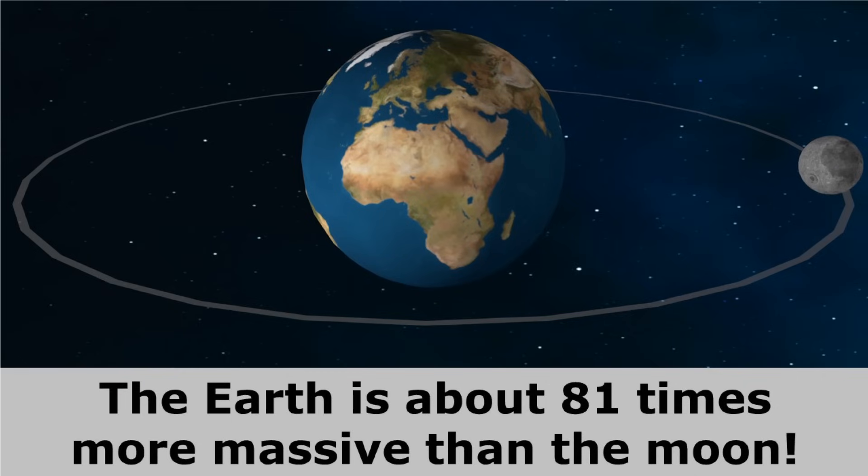The Moon revolves around the Earth because the Earth has much more mass than the Moon. The Earth is about 81 times more massive than the Moon.